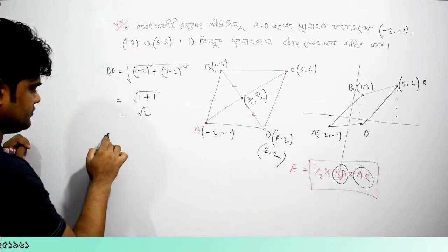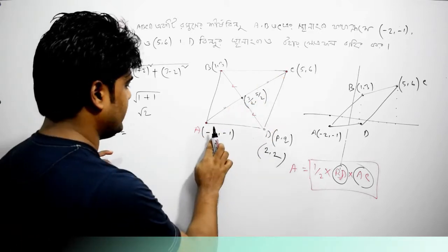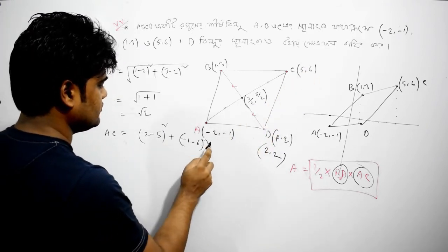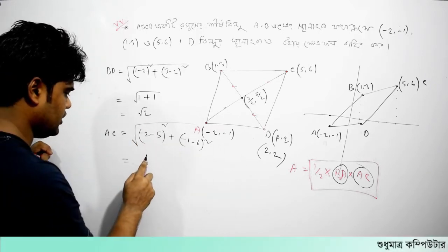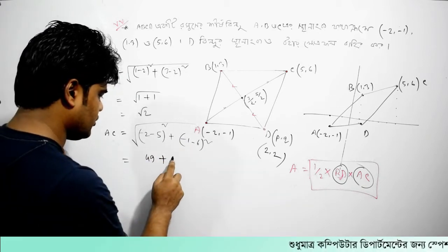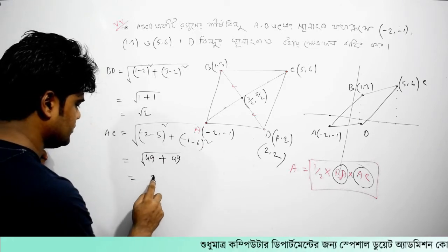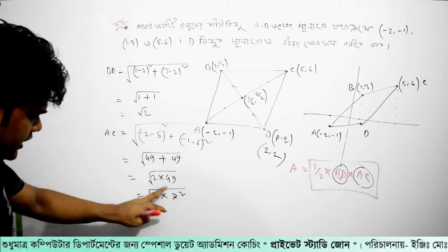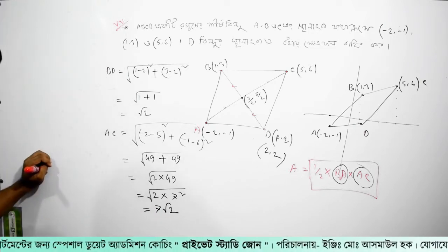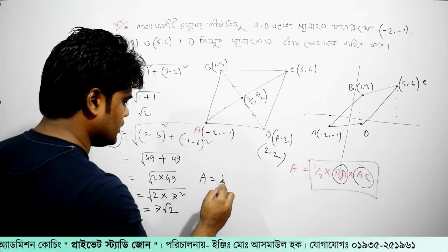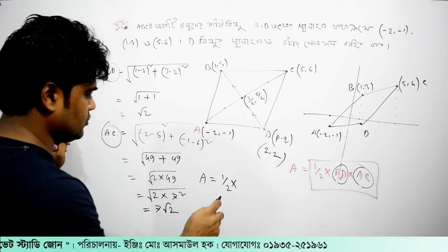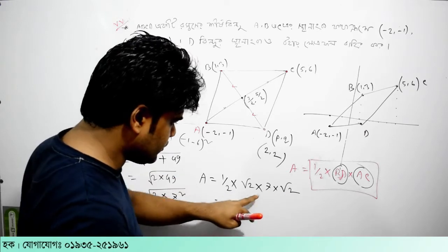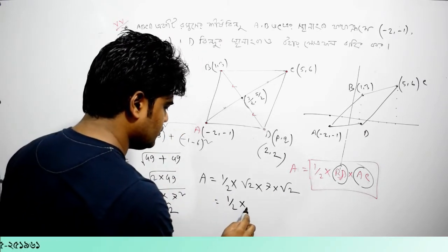AC: minus 2 minus 5 whole square plus minus 1 minus 6, root over. So the same thing is 49 plus 49. 2 into 49. The calculation is 2 into 7 squared = 49. So AC is BD — BD means root over 2. AC is root over 2. Look, root over 2 is the same root over 2. 1 into 2 into 7. 2 into 2 into 7. This is root over 2.